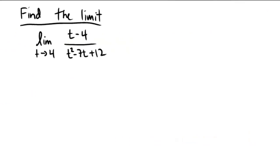This problem is asking us to find the limit as t approaches 4 of t minus 4 over t squared minus 7t plus 12.